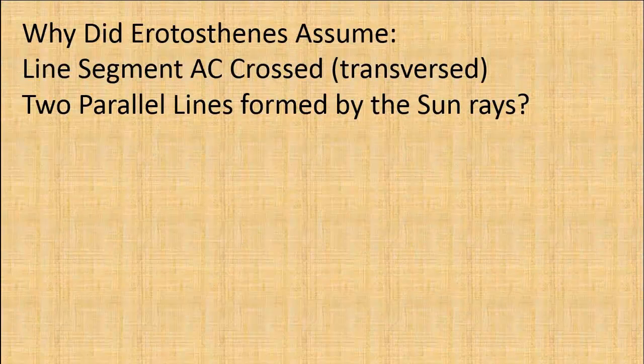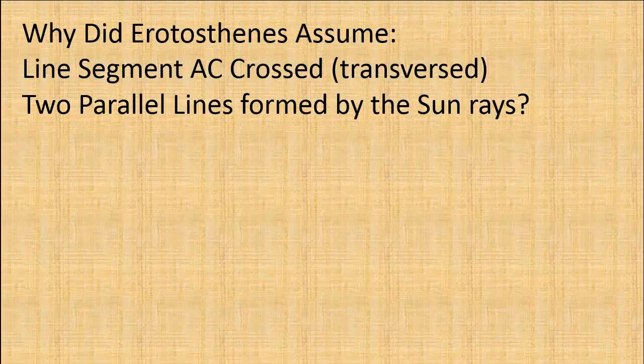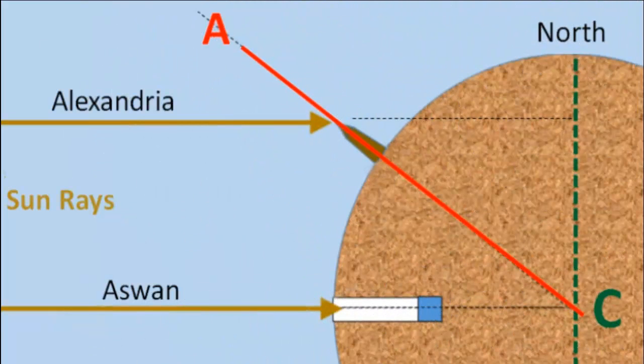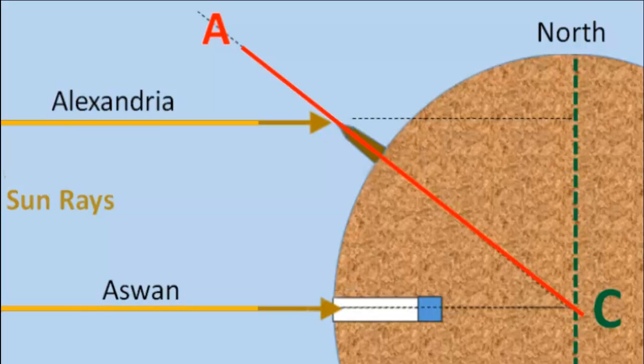Why did Eratosthenes assume that line segment AC crossed or transversed two parallel lines formed by the sun's rays? Living just before Eratosthenes was Euclid, another Greek famous as the father of geometry. Euclid's elements of geometry had shown that a line cutting across parallel lines, a transversal, has special properties. The best way to see it is to take it step by step. He showed that if the yellow lines are parallel, then the red transversal would cut across both yellow lines at the same angle. On the figure, angle S shows this property. These angles are called corresponding angles, and Euclid showed they are always equal if the yellow lines are parallel. That is intuitive looking at the figure, but Euclid proved it.